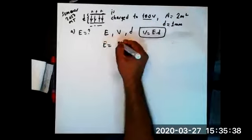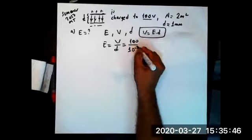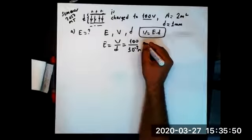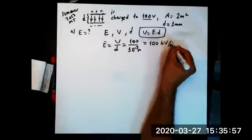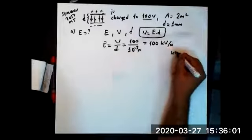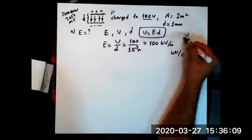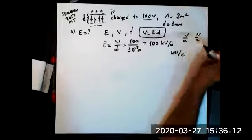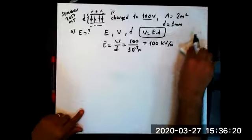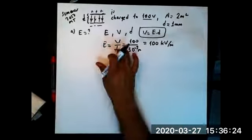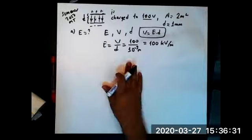So that means E is just V divided by D. V is 100 volts and D is 1 millimeter or 10 to minus 3 meters, making the electric field strength as 100 kilovolt per meter. Or kilonewton per Coulomb. Remember, for electric field, the unit can be either volt per meter or newton per Coulomb. But for this context, we use volt per meter as the unit for the electric field.